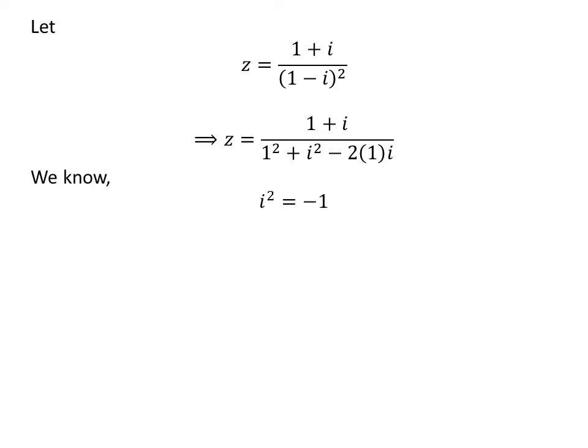We know square of imaginary unit i is minus 1. So application of the above property of imaginary unit gives us z is equal to 1 plus i upon 1 minus 1 minus 2 times i.